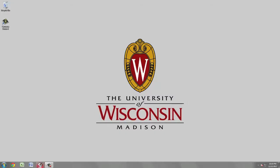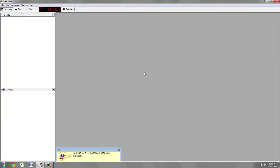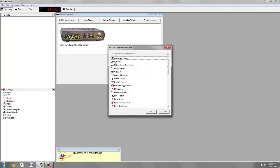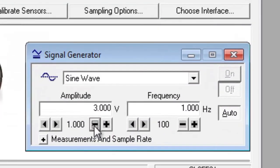To begin the experiment, launch DataStudio, create an experiment, and select power amplifier as your instrument. The signal generator window will then pop up. You can use this window to set up the amplitude and the frequency of the speaker input.